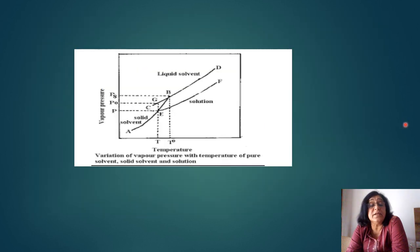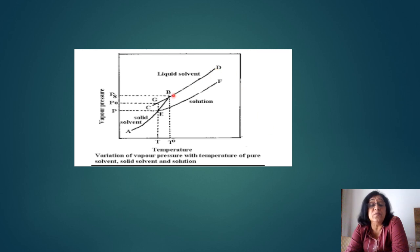In the graph, D to B is the liquid solvent curve and A to B is the solid solvent curve. When liquid and solid are in equilibrium, that point is the freezing point of the pure solvent. For the solution, vapor pressure is less, so the liquid and solid will be at equilibrium at a lower temperature — called the depression in freezing point. The difference is ΔTf. The graph is between vapor pressure and temperature.